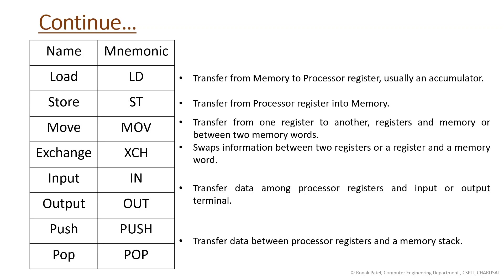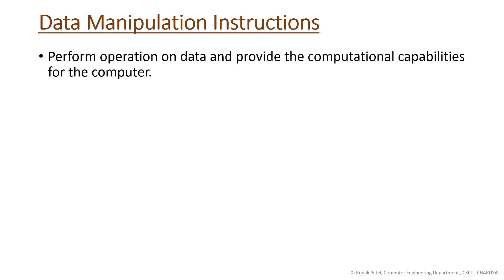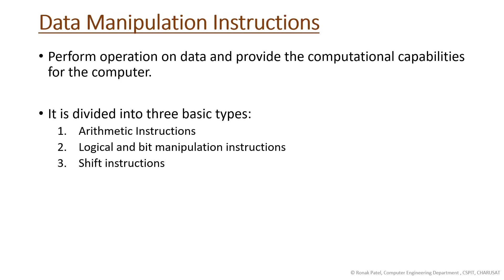All these data transfer instructions will not change the data; they just move data from one location to another. Data manipulation instruction performs operations on data and provides the computational capabilities for the computer. It is divided into three basic types: arithmetic instruction, logical and bit manipulation instruction, and shift instruction.